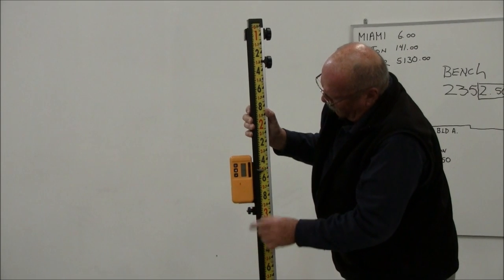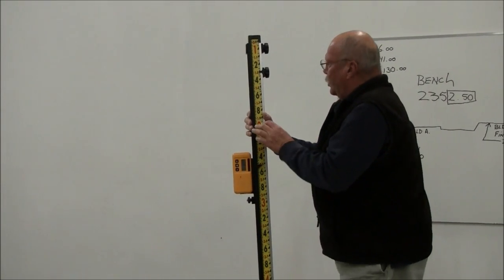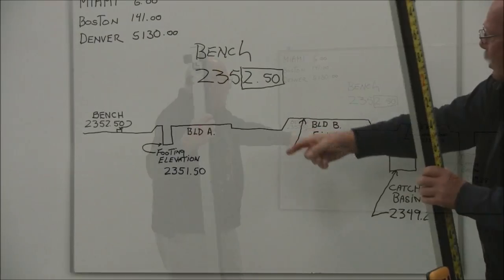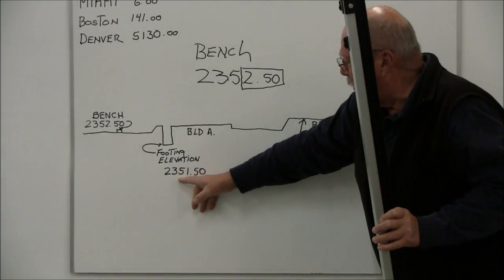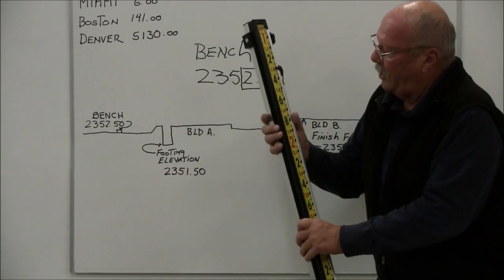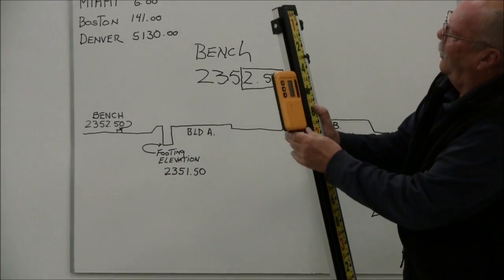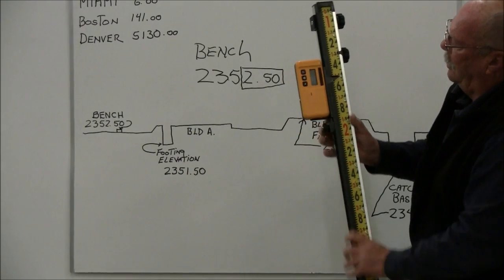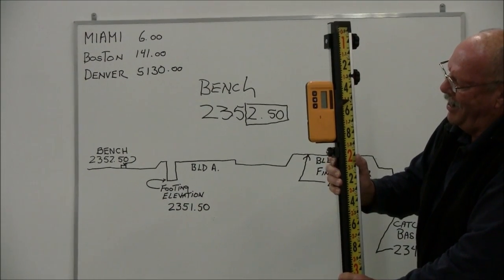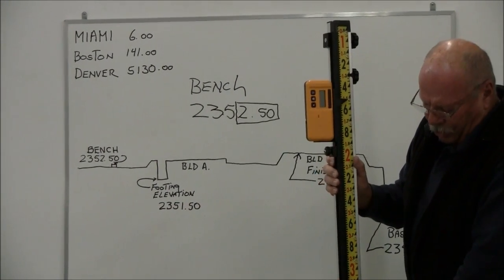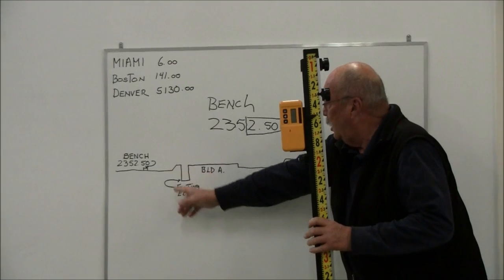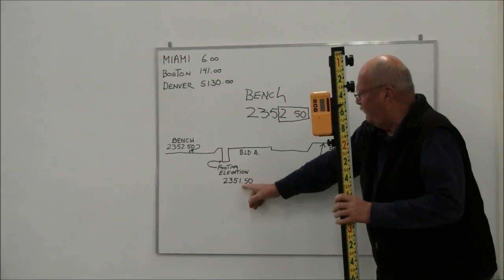Now, okay, so I'm on grade there and I'm at 250. So what I want to do with this rod at this point is, if I want to now pick up elevation at 2,351.50, which is say a footing elevation, I can run the receiver up to 150. And as I dig down, when the receiver goes off, I'll know that the bottom of my rod is at this 2,351.50.